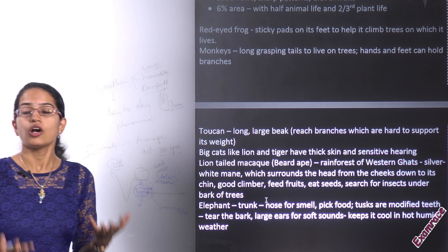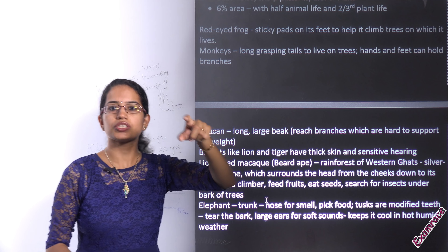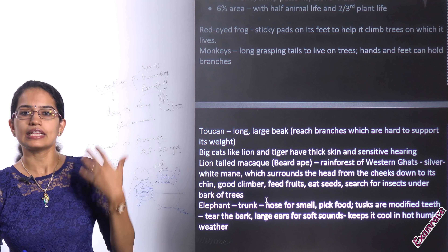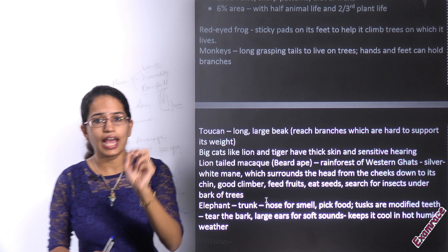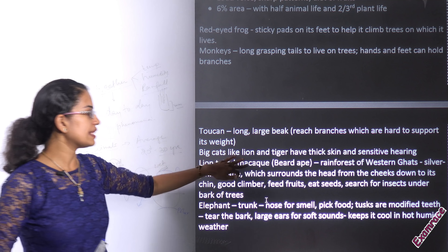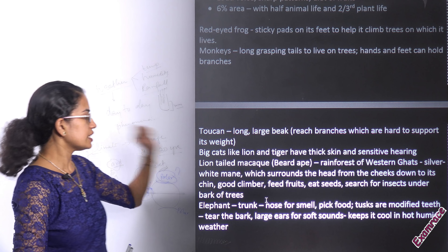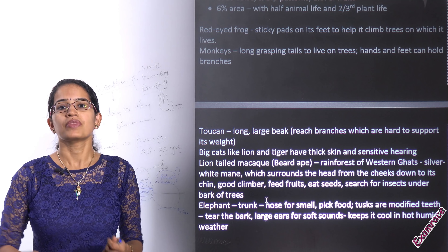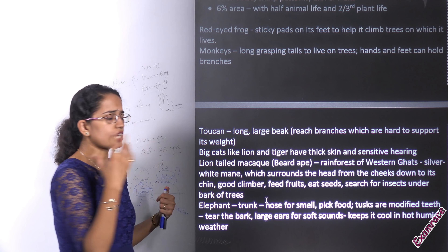Coming to the tropical area, these animals are a bit different. The tropical area has very strong competition for food. Important characteristics include a loud voice, sharp patterns of voice, sharp vision, strong beaks, and a diet full of fruits and vegetables due to ample trees and vegetation. The tropical area accounts for around six percent of the total area, yet holds half of the animal life and nearly two-thirds of the plant life that exists on Earth.